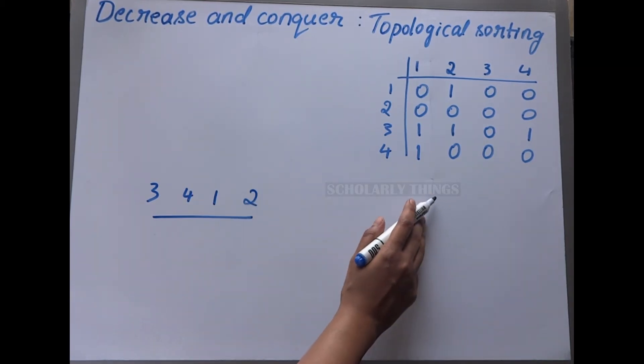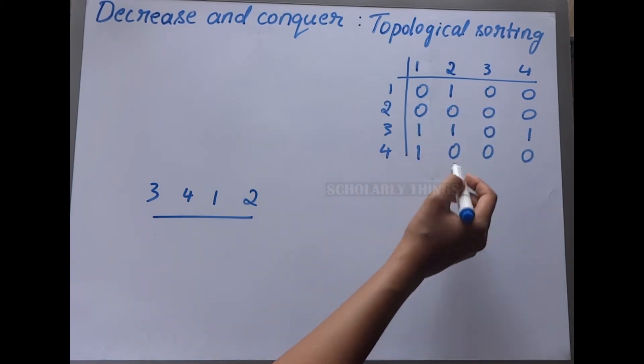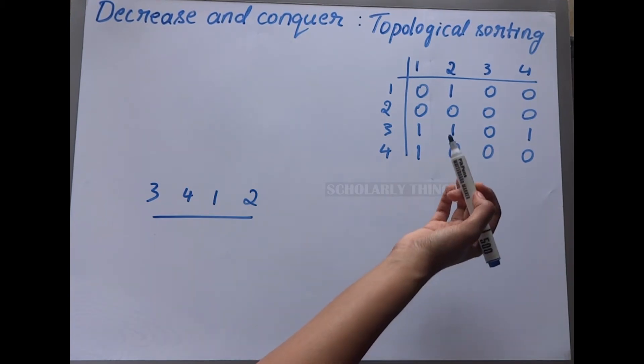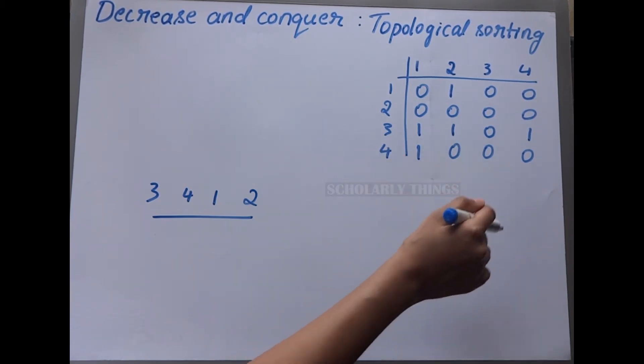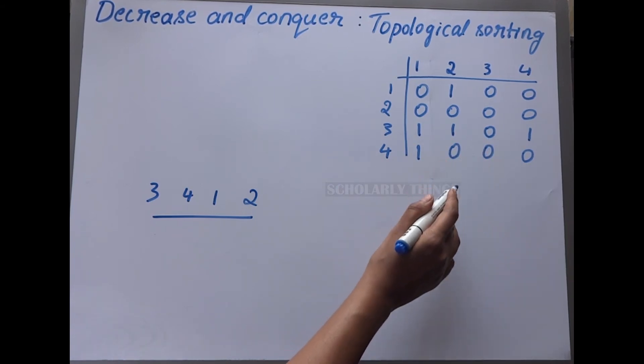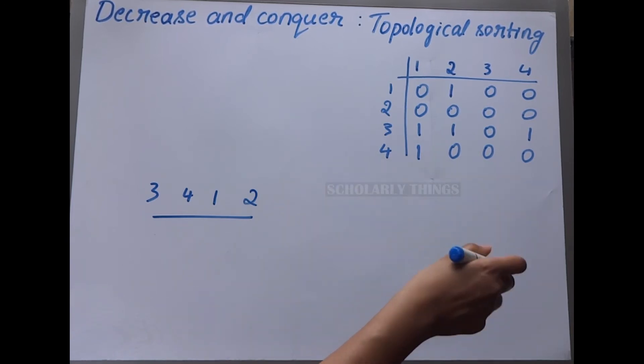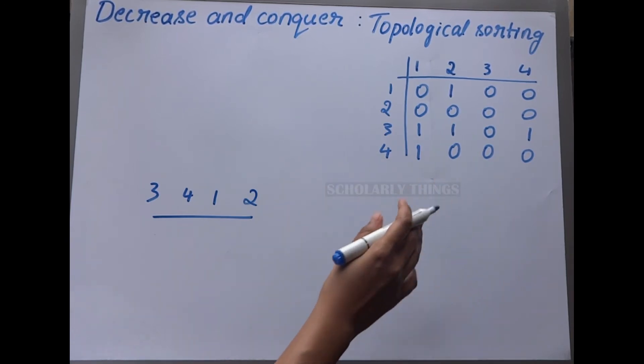The logic behind the algorithm is that: take the sum of each column. Column with sum equal to 0 is the first node to be visited. Then remove that column and row. Then again take the sum, wherever the sum is 0, that's the next node to be visited and delete corresponding column and row. Repeat till all nodes are removed.